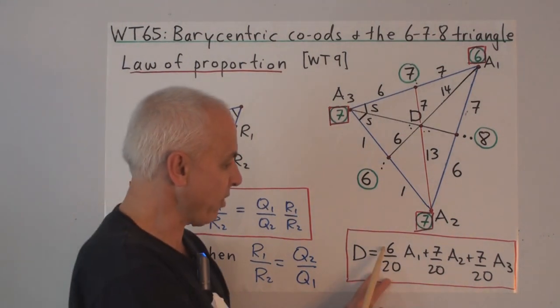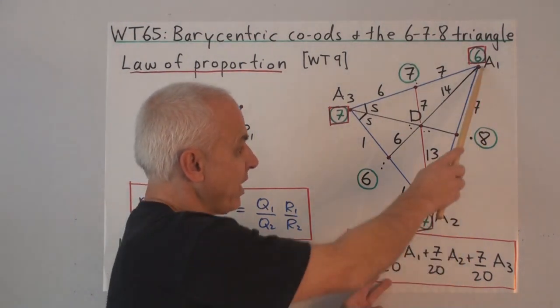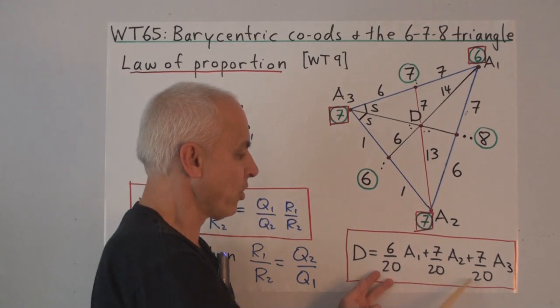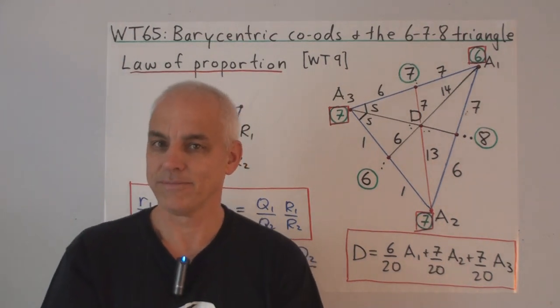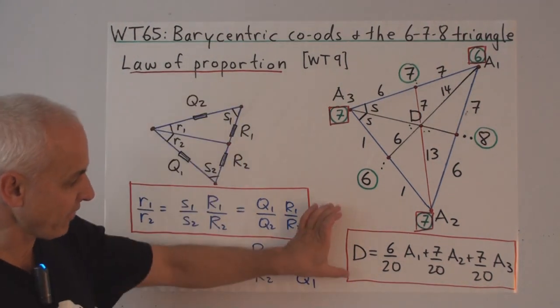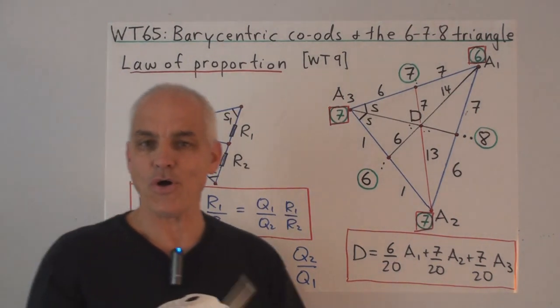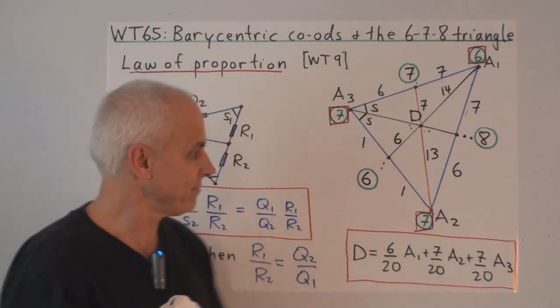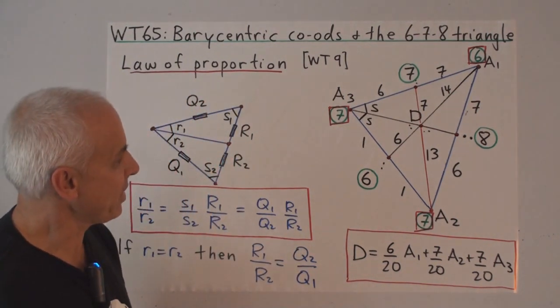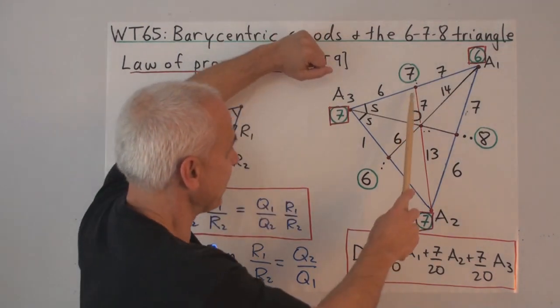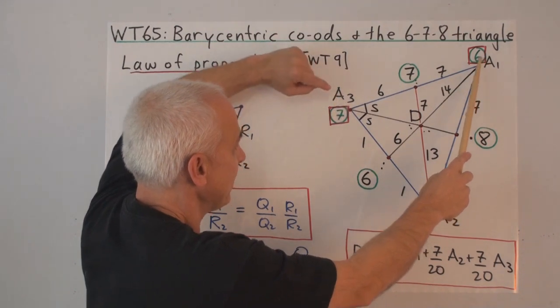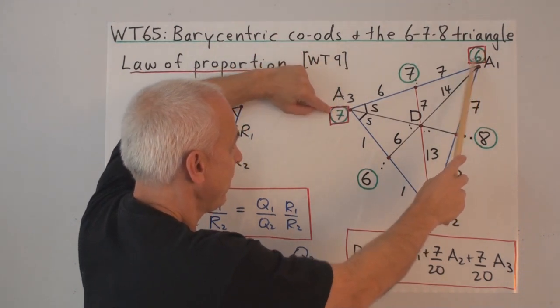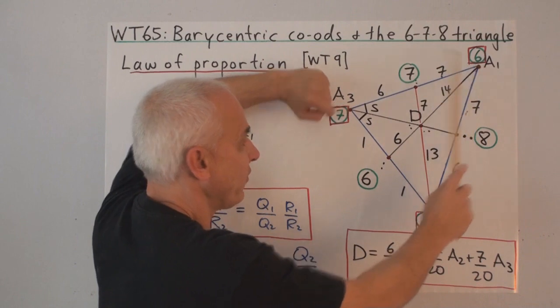And these numbers come from, well, 6, 7, and 7 are just the weights, divided by the total weight, which is 20, to ensure that these three numbers add up to 1. And once we've written an expression like this, we can deduce all kinds of other proportions. For example, we can deduce that in exactly the same way. This must be a point of balance of this side. And since these weights are 6 and 7, this must also be in the ratio of 6 to 7.